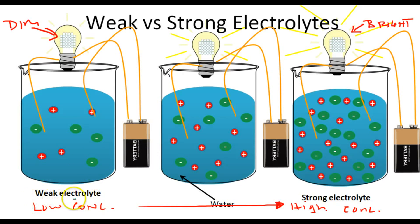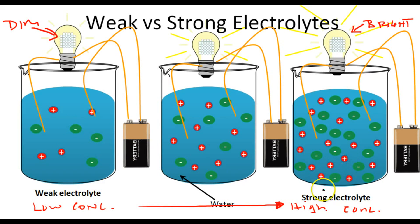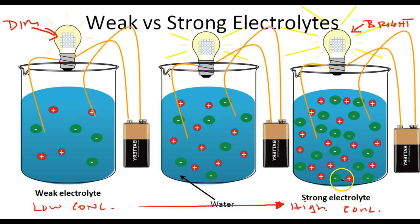As the concentration of ions increases, so will the brightness of this light bulb and the strength of the electrolyte. A weak electrolyte has a low concentration of positively and negatively charged ions, whereas a strong electrolyte has a high concentration of positively and negatively charged ions. So this is electrolytes in a nutshell, and I hope you found this helpful.